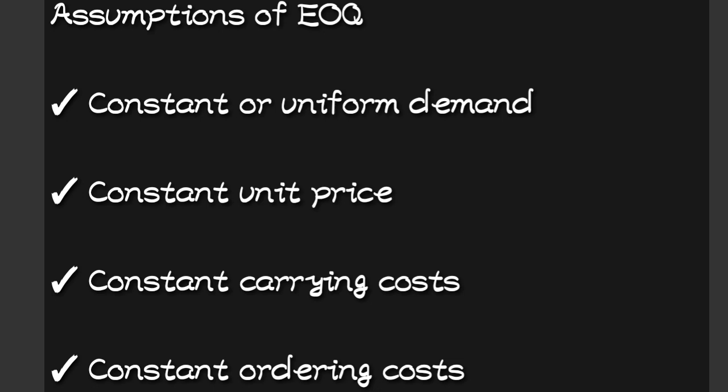Another assumption is constant unit price — the EOQ formula assumes the purchase price of the material remains constant regardless of order size. This is not always the case, as items purchased in large quantities often attract discounts, reducing the price. So price is not always constant, but the EOQ technique assumes it is.